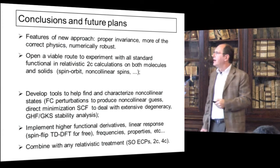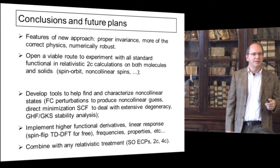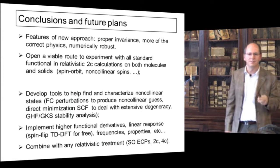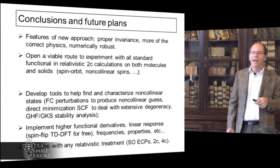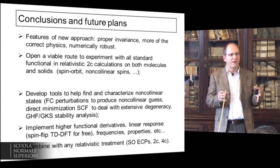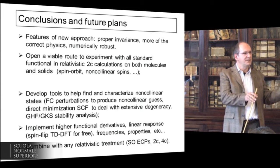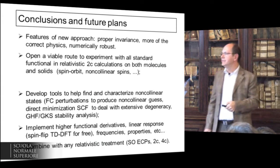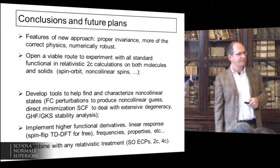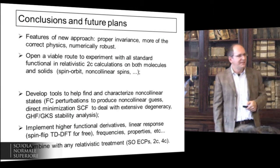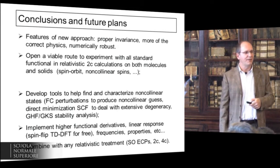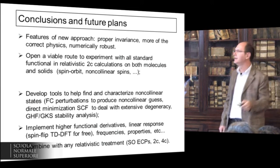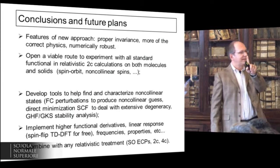Conclusions: a new approach to extend collinear density functionals to non-collinear relativistic calculations with proper invariance and more of the correct physics — crossing our fingers that it is meaningful. It is numerically robust, and it opens a viable route to take wholesale all the work done in functional development and use it at least in two-component relativistic calculations. The bad news is that you need to find these non-collinear states, and that's not easy to do, because the SCF wave function needs to be non-collinear and break symmetry right away.